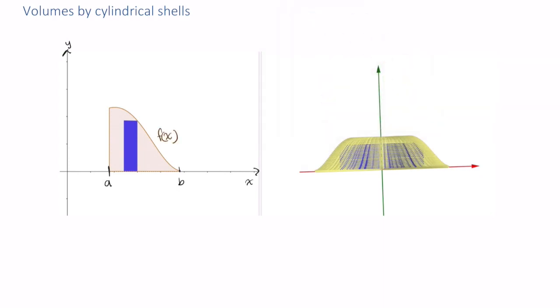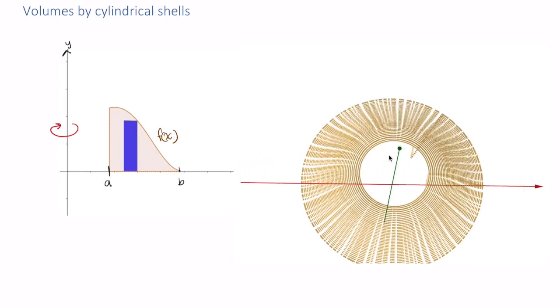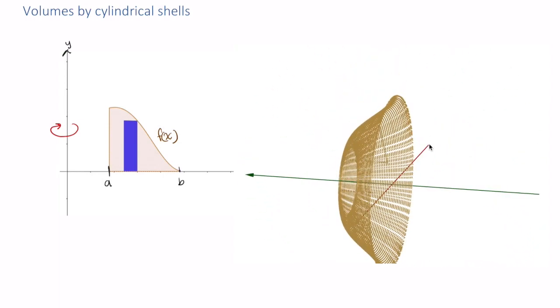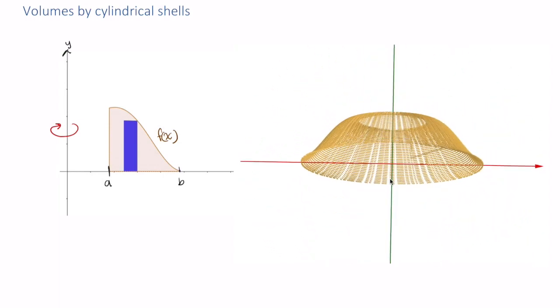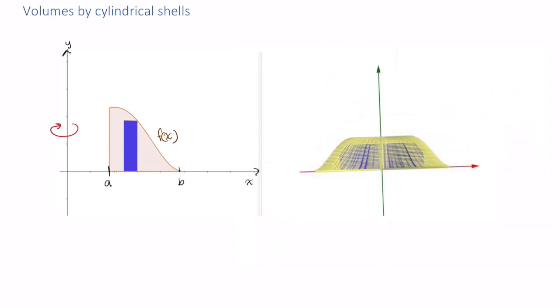Say we wanted to rotate f of x about the y-axis. That would create a solid that looks like this.